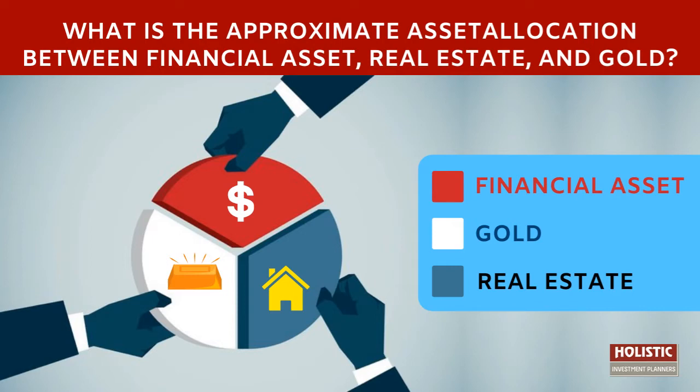To give a generic answer, there is something called a risk profiler. What this risk profiler does is tell us what category of investor you are. Broadly, there are three categories: one is an aggressive investor, second is a moderate investor, and the third is a conservative investor. You fill up a questionnaire, and based on your score, you are categorized into these three.